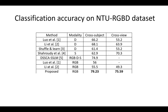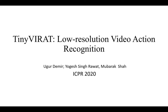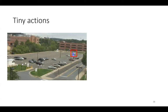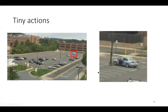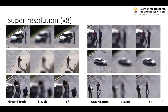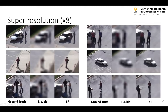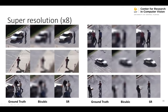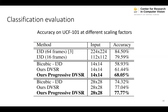We have also worked on tiny actions. Given this kind of video, it's very difficult even for humans to recognize what's happening. If you zoom in, this is actually a person getting out of a car. Our approach is to take the low-resolution video and do super resolution, then use that to recognize the actions. We can super resolve by eight, and we get pretty good results — even with 14 by 14 resolution of the action.